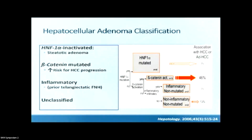Hepatocellular adenomas can be divided into basically four types. The first three — HNF1-alpha-inactivated, beta-catenin-mutated, and inflammatory — are very well recognized, and we utilize specific immunostains to categorize them. However, about 10% of adenomas remain unclassified.